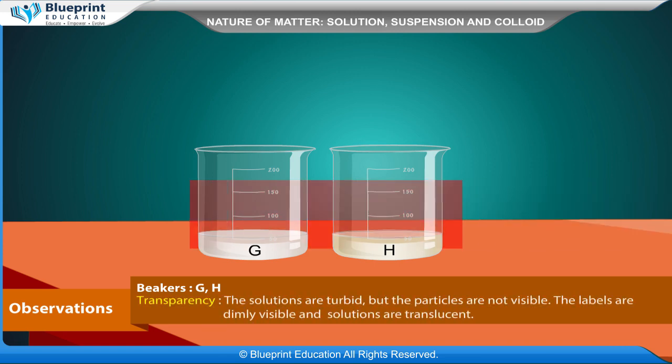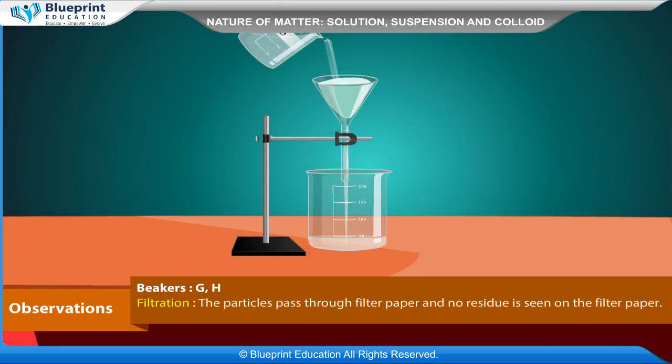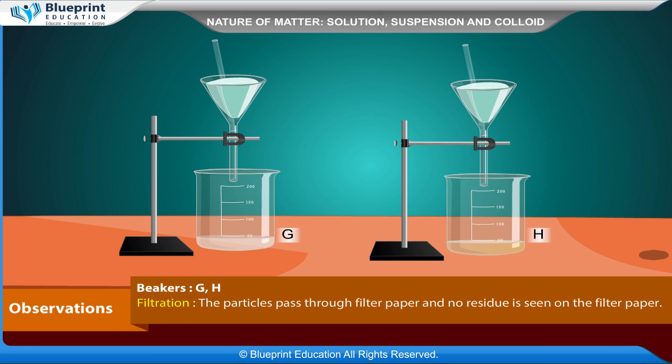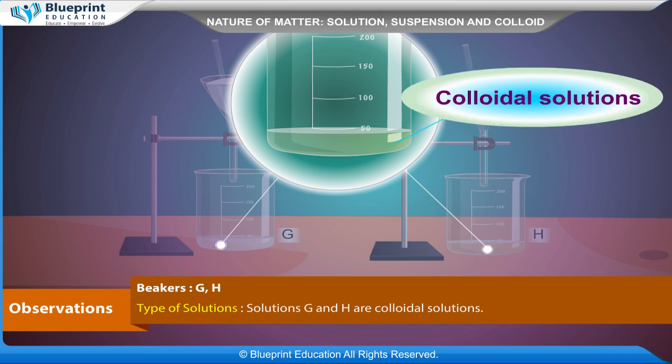Beakers G, H: Transparency: The solutions are turbid but the particles are not visible. The labels are dimly visible and the solutions are translucent. Stability: The particles do not settle down as sediments; the solutions are therefore stable. Filtration: The particles pass through filter paper and no residue is seen on the filter paper. Solutions G and H are colloidal solutions.